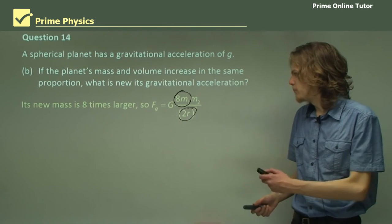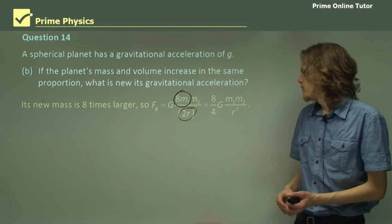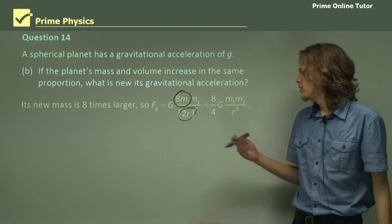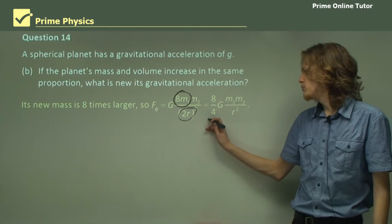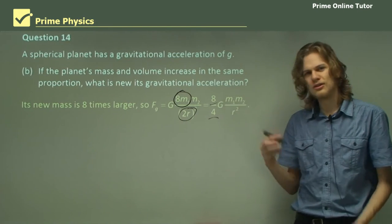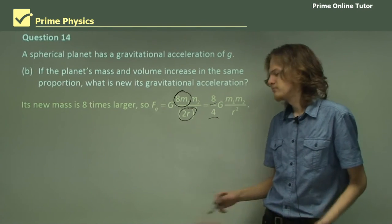So let's work on this a bit. This will equal 8 over 4 gmm over r squared because we've squared the 2 and moved it out to the front. And we've taken the 8 and moved it out to the front just because it looks nicer. Makes sense?